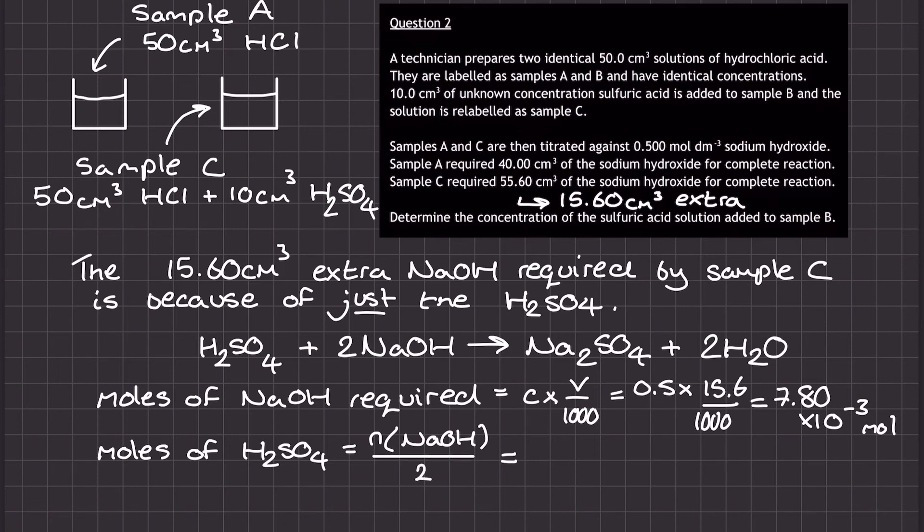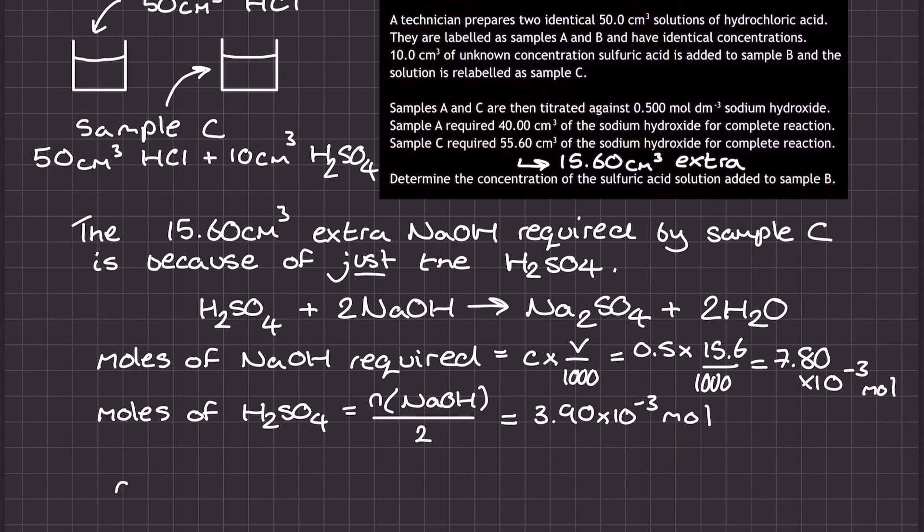According to the ratio, by dividing this value by 2, I can then determine the number of moles of sulfuric acid, which is equal to 3.90 times 10 to the power of negative 3 mole.